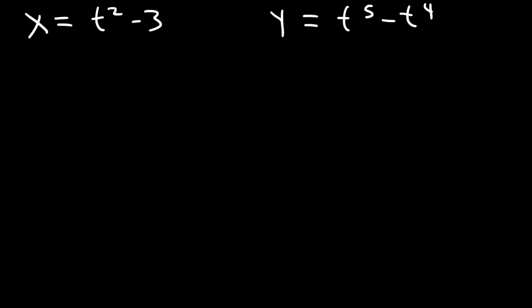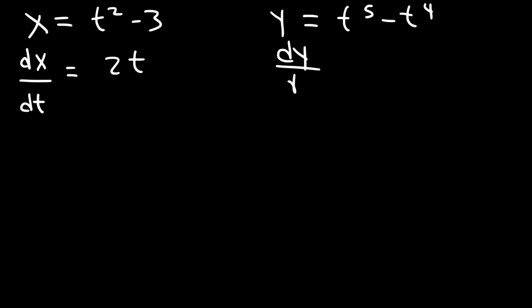How can we find a third derivative? Well, we need to find the first derivative, the second, and then the third. So let's start with the first derivative. What you want to do is find dx/dt and dy/dt. So dx/dt is 2t, and dy/dt is going to be 5t to the fourth minus 4t cubed, based on the power rule.